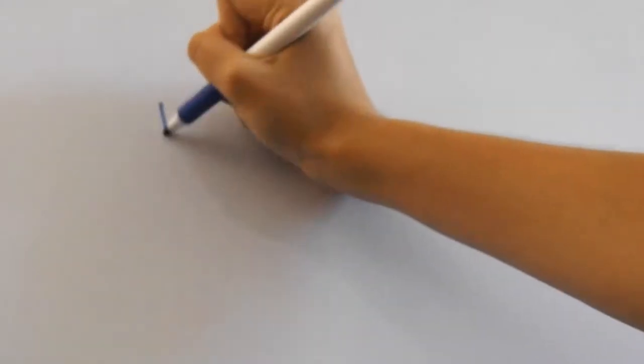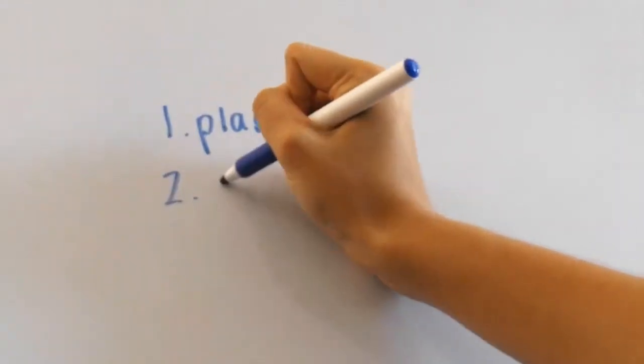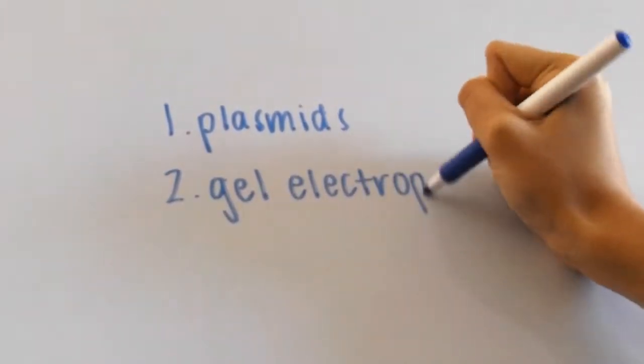So today we're going to go over two of the labs found in an AP Biology course, the uptake of plasmids by bacteria and gel electrophoresis.